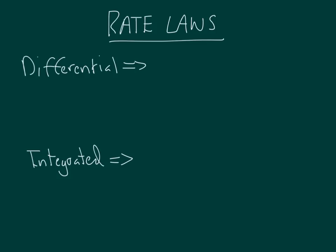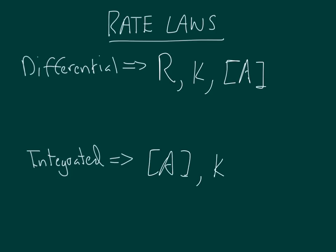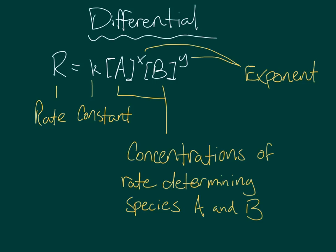Moving on to the rate laws. Rate laws are equations that relate concentration, time, the rate constant k, and the rate itself. There are two different rate laws: the differential rate law, which tells how the rate depends on the concentration, and the integrated rate law, which expresses how concentration depends on time. The differential rate law can be expressed as r equals k times the concentrations of A and B raised to exponents x and y, where big A and B are the instantaneous concentrations of these species.